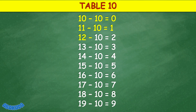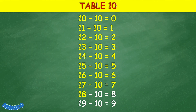Table 10: 10 minus 10 equals 0, 11 minus 10 equals 1, 12 minus 10 equals 2, 13 minus 10 equals 3, 14 minus 10 equals 4, 15 minus 10 equals 5, 16 minus 10 equals 6, 17 minus 10 equals 7, 18 minus 10 equals 8, 19 minus 10 equals 9.